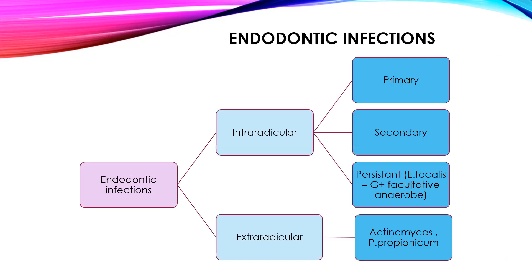What are the different types of endodontic infection? Broadly, they can be classified into intraradicular and extra-radicular. Intraradicular infections are further classified into primary, secondary, and persistent intraradicular infections, whereas extra-radicular infections are based upon their causative microorganisms such as Actinomyces and Propionibacterium propionicum.